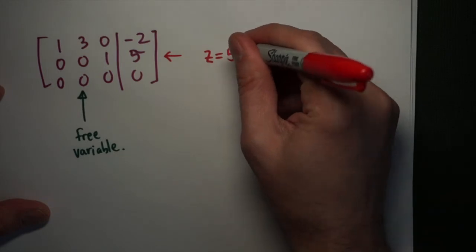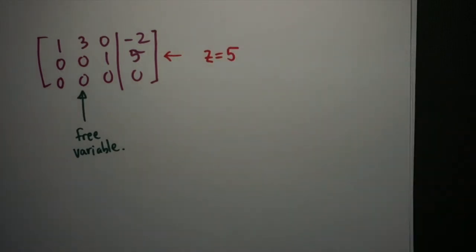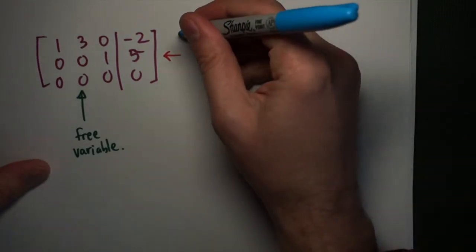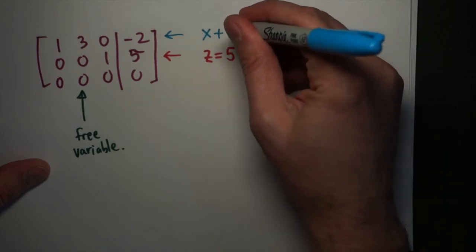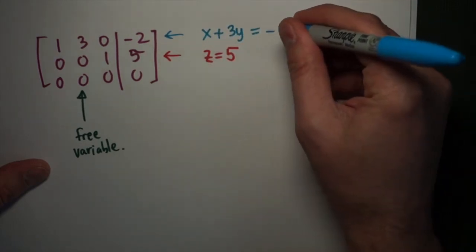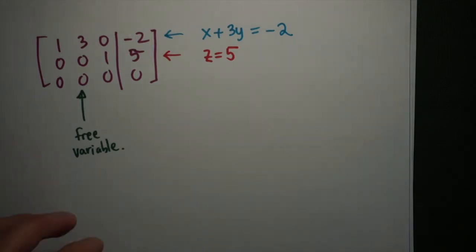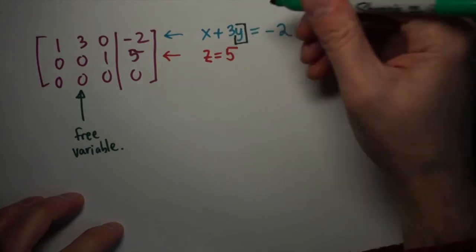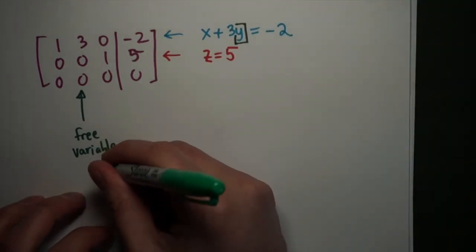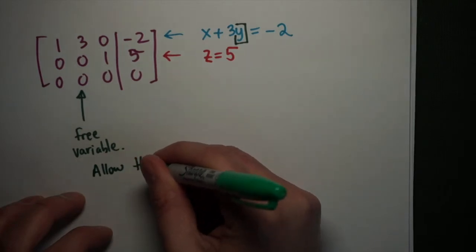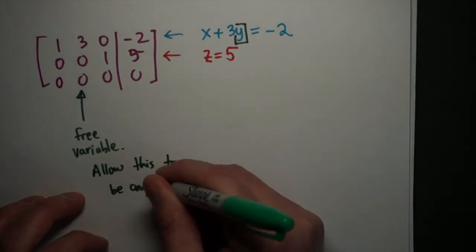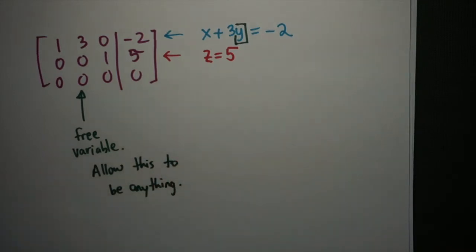Then we can read off the solutions. This last row tells me that z has to equal 5, and so that's fine. The first row will give me an equation both in terms of x and y. If I write this down, it says that x plus 3y plus 0z is equal to negative 2. The reason I make y a free variable is that I have no way of writing down y by itself.